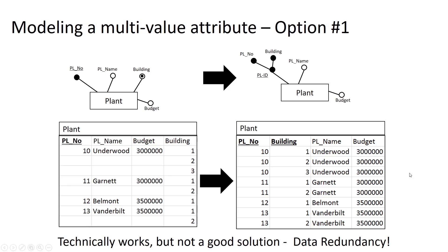Imagine that for plant 10, we wanted to update the budget from 3 million to 5 million. Now we have to update that value in three places, which doesn't make sense because we're just talking about one budget for one plant. It's more work than we need to do, and it also creates a situation where we might accidentally update the budget in one or two cells but not the third, leading to data integrity issues where we can't reliably know what the value for this plant is supposed to be.